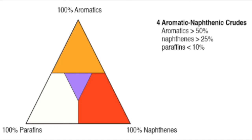Let us continue with the demonstration of using ternary diagrams for crude classification. This time we will place the type 4 aromatic naphthenic crudes on the ternary diagram.